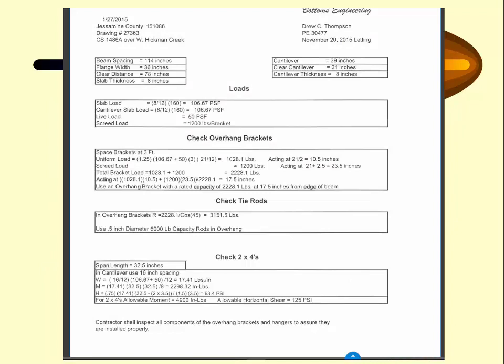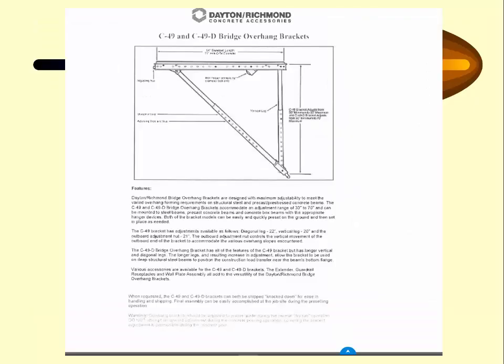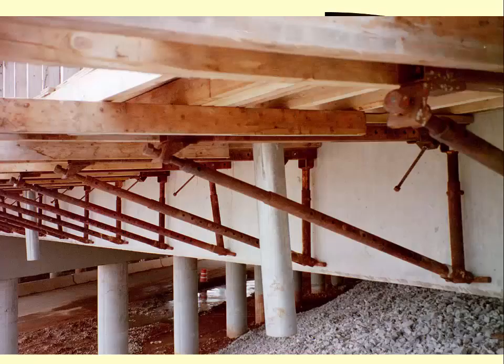The overhangs get submitted with the weight of the load, the live load, the screed load, and the bracket spacing calculations. These come into the central office construction for review and are sent back. What the inspector needs is the approved drawing — this tells you how the brackets are spaced, how they're constructed, and how they need to be built. As the inspector, you need to make sure they are building this as per the plans. They'll submit the type of overhang brackets they're using, and ultimately it's your job to make sure they're built per the plans.